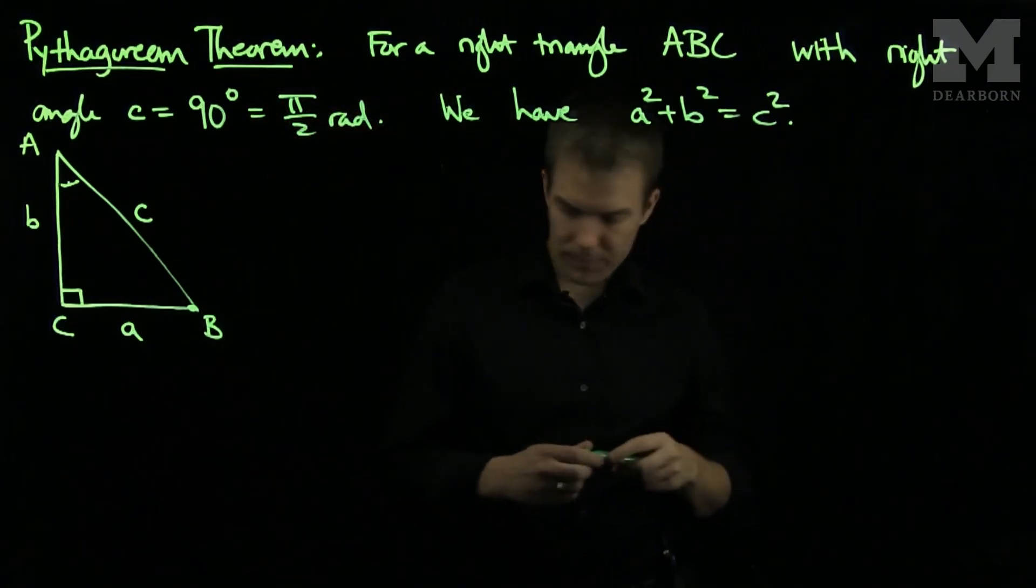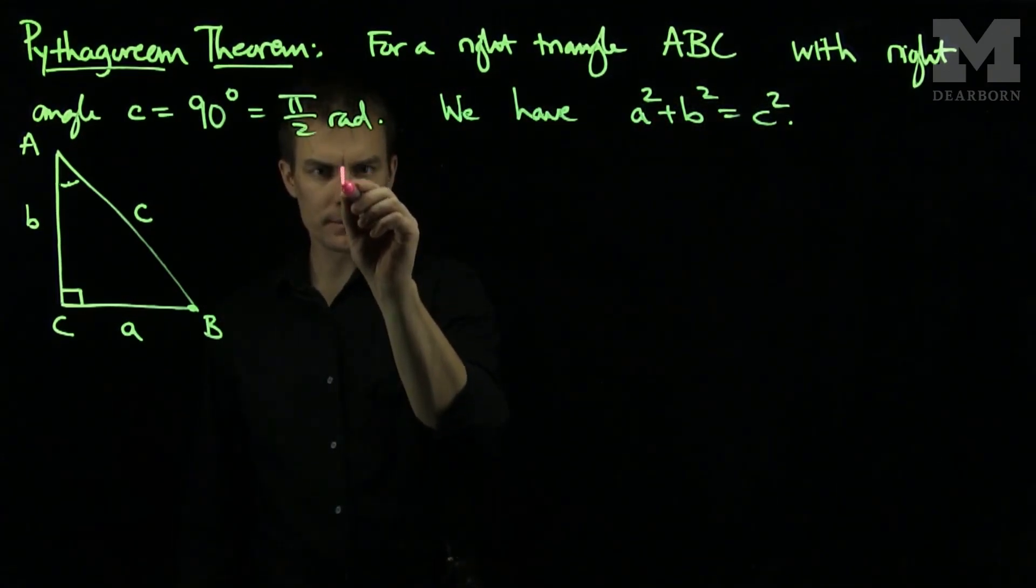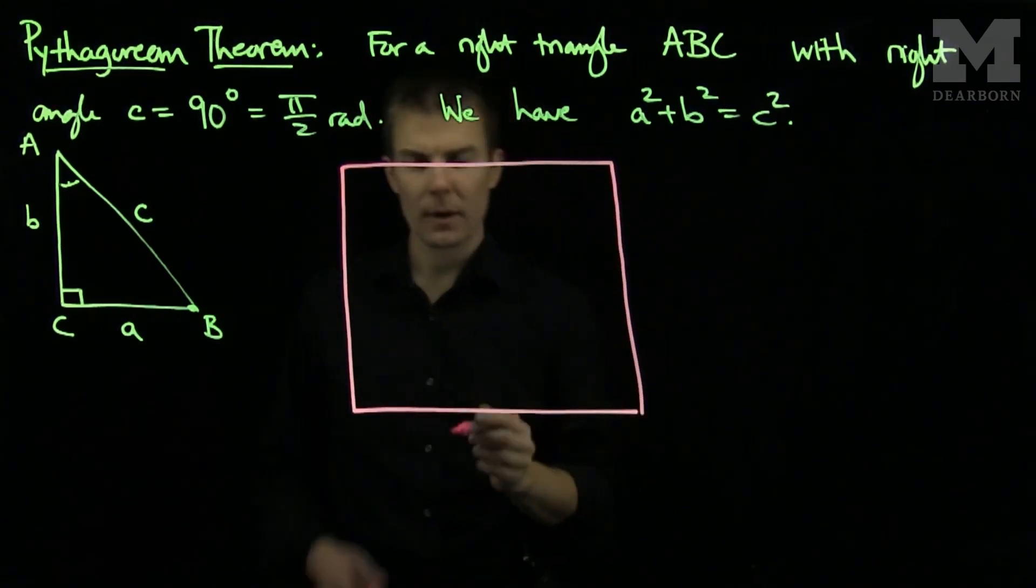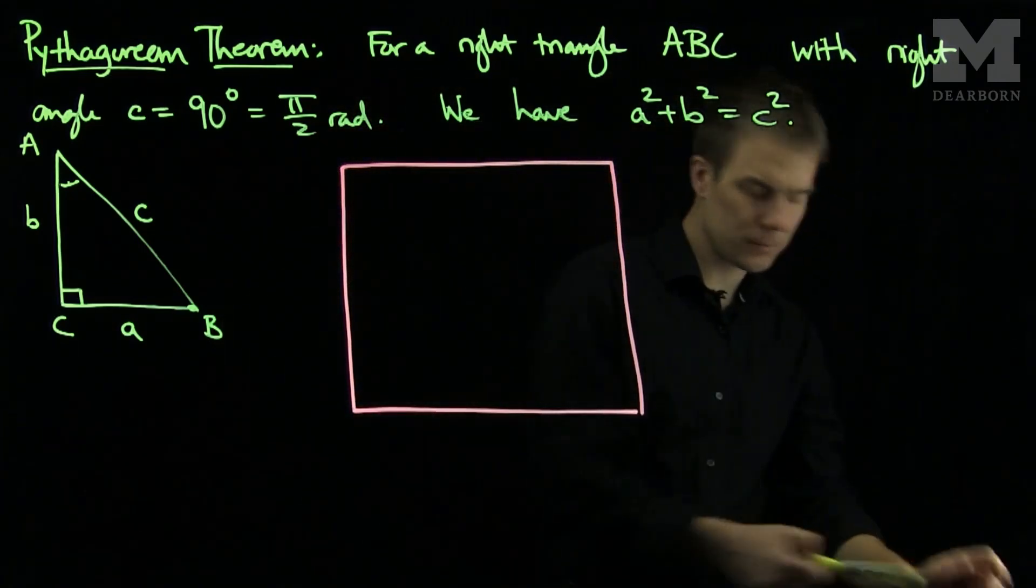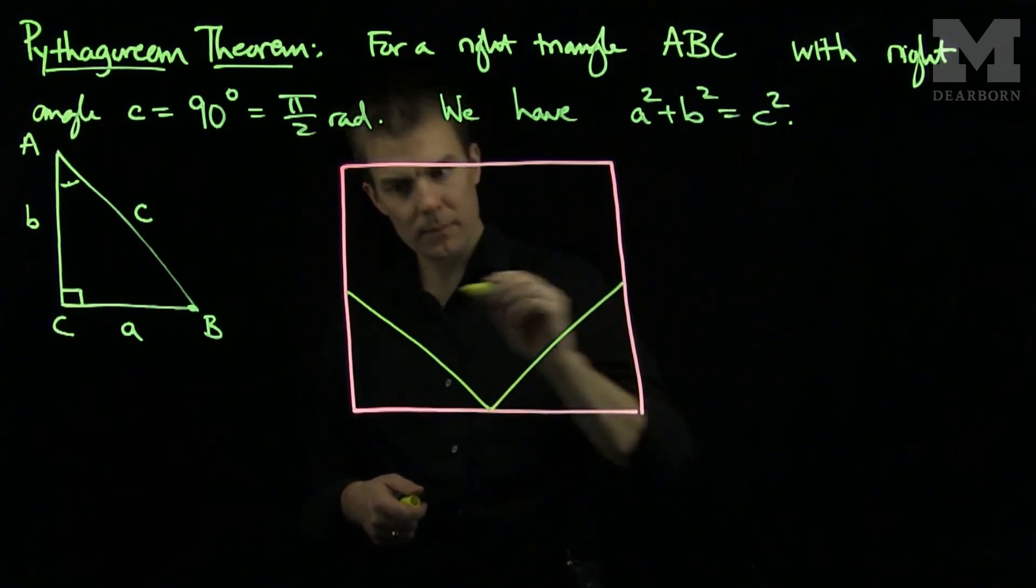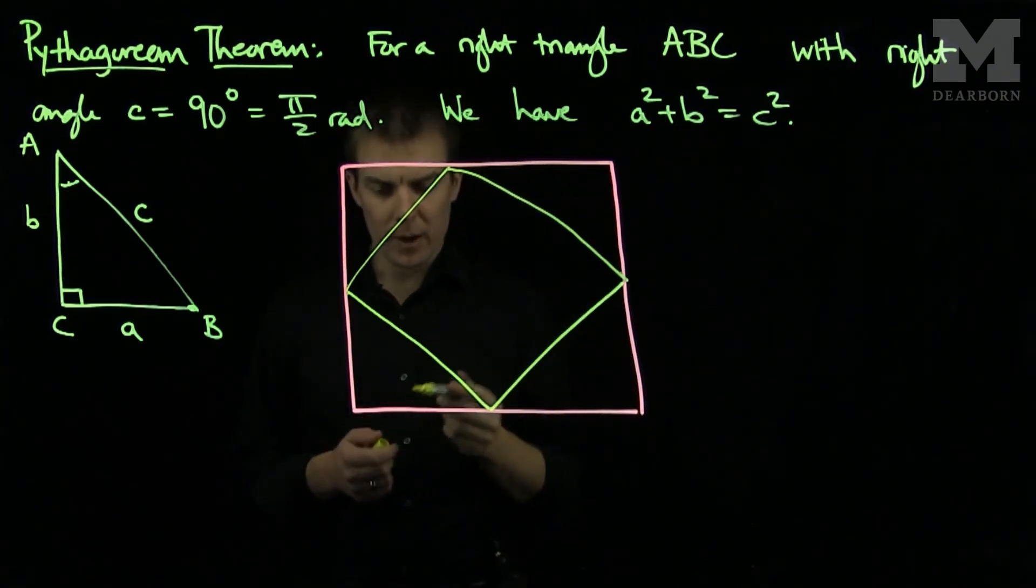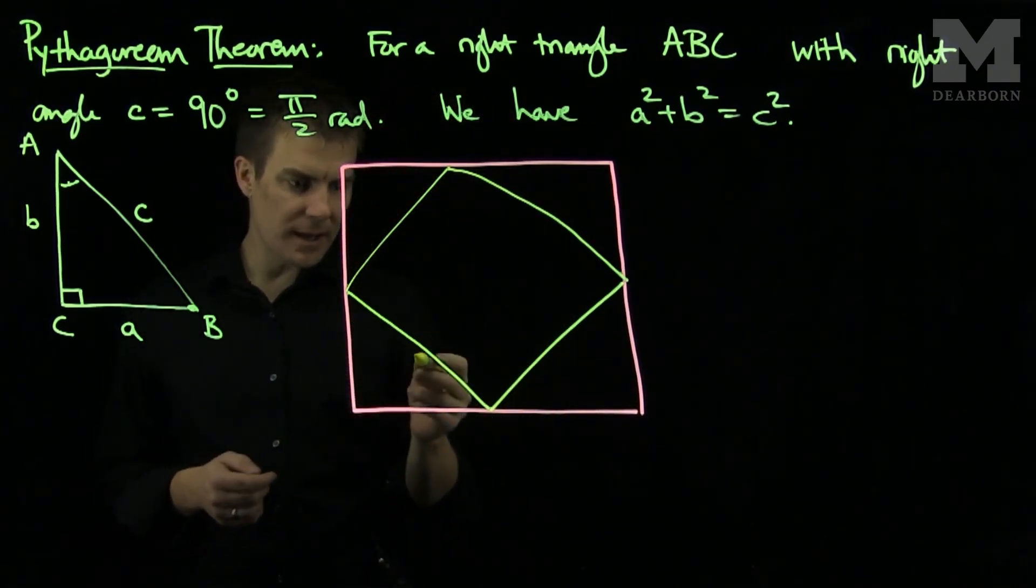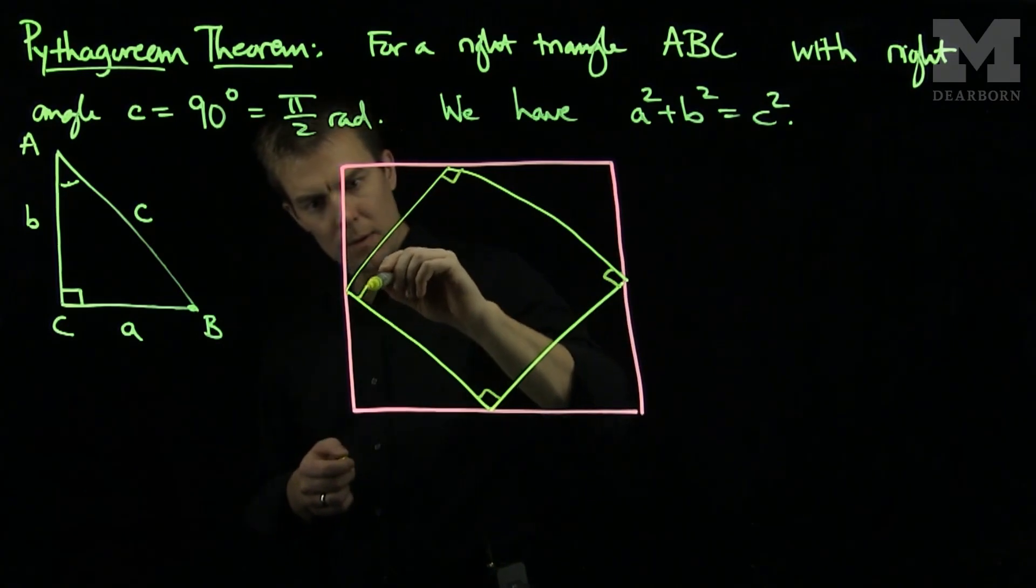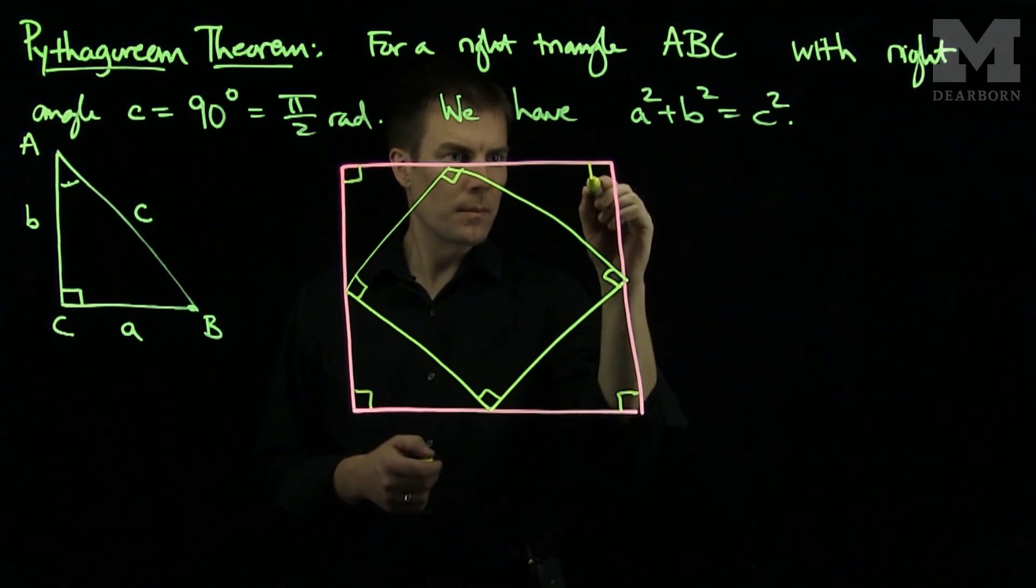So, to prove the Pythagorean Theorem, we'll do the following. We will draw a square, and inside this square, we will draw another square. So I have a yellow square and a pink square. And what we'll see over here is that I will make this a square, and this a square as well. So I have lots of right angles.